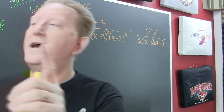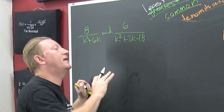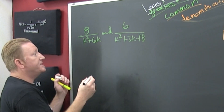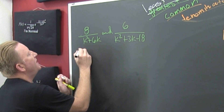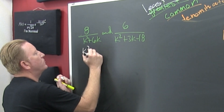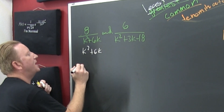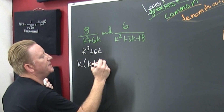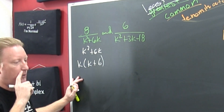All right, now what? When in doubt, factor first, because that needs to be part of the game plan. So I'm looking at that denominator: k squared plus 6k. I'm going to factor out that k, and then that's going to be k times (k plus 6).